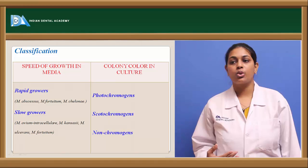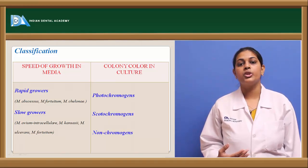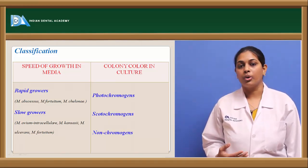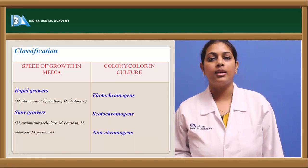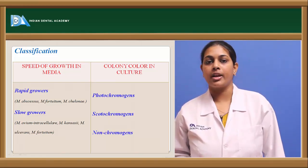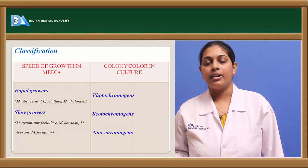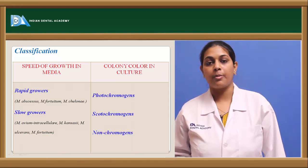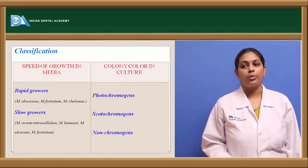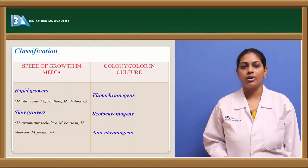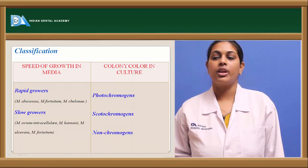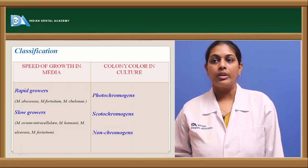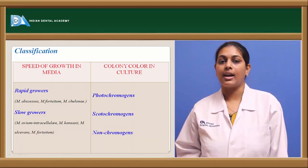Scotochromogens have the property to produce pigments when grown either in light or in the dark — any kind of condition. Non-chromogens do not produce any chromogenic pigment in whatever conditions they are cultured. These are the classifications based on growth speed and colony color in culture.